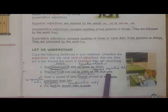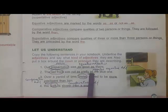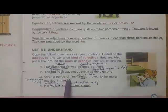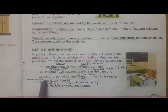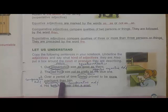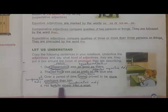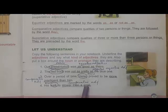Second: 'The red frog was not as pretty as the blue one.' Here 'frog' is the noun and 'not as pretty as' is a negative equative adjective. Third: 'Over a period of time Helen proved to be more intelligent than him.' Here 'Helen' is the noun and 'more intelligent than him' — we are making a comparison, so it is a comparative adjective. 'His walk is slower than a snail' — 'walk' is the noun and 'slower than a snail' is also a comparative adjective.